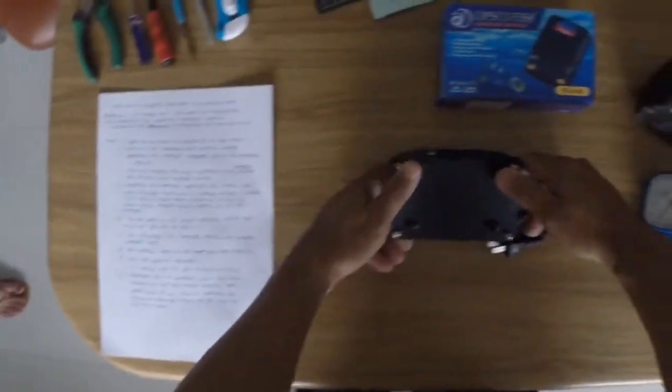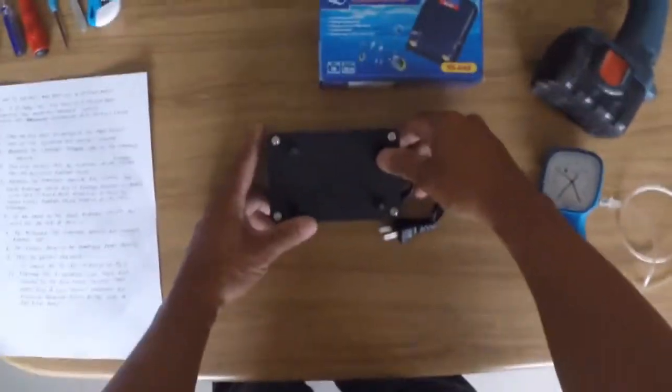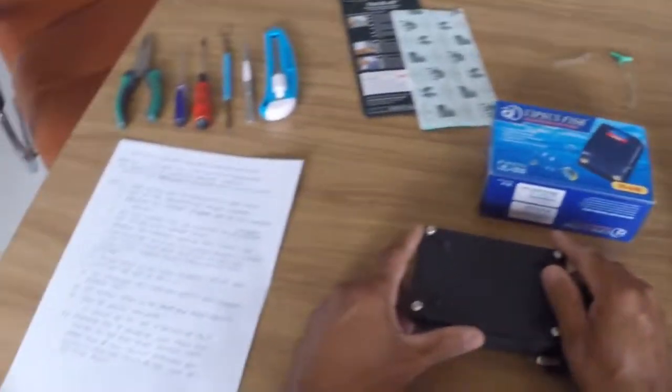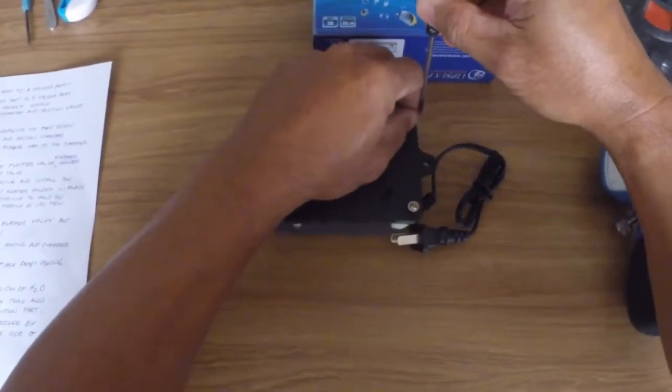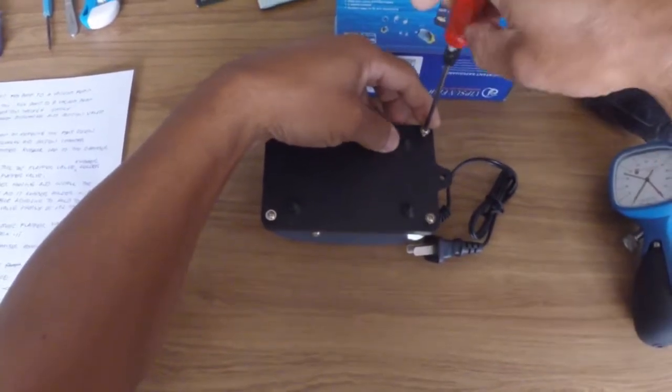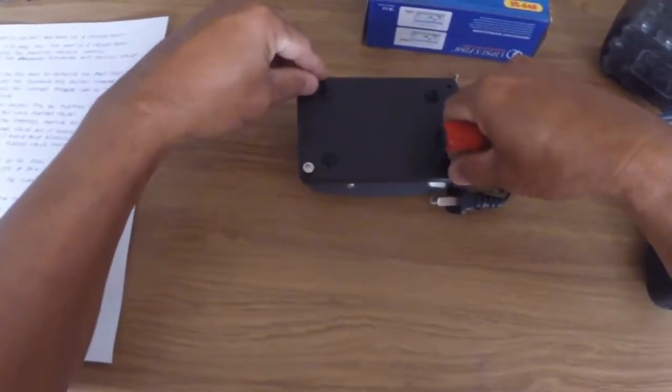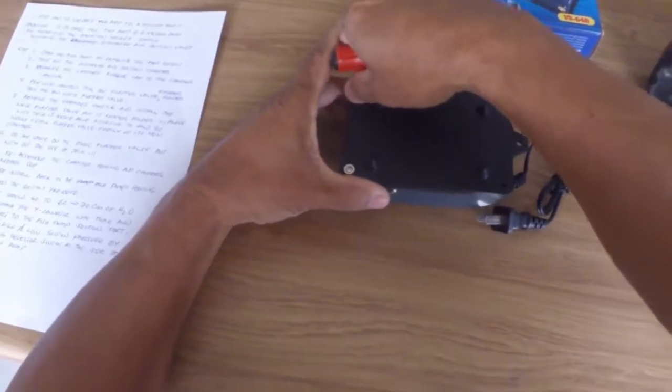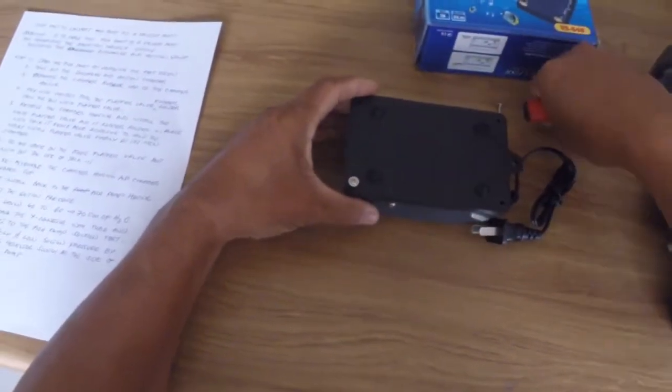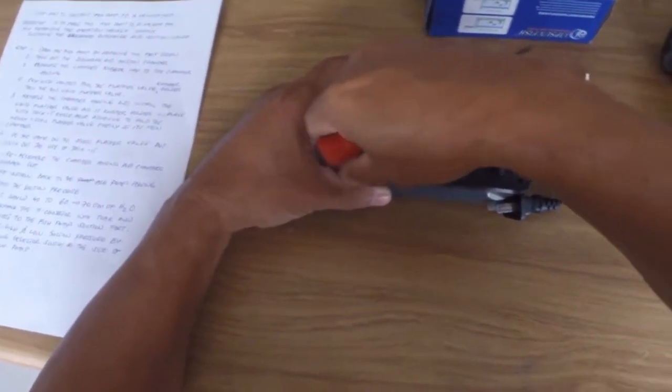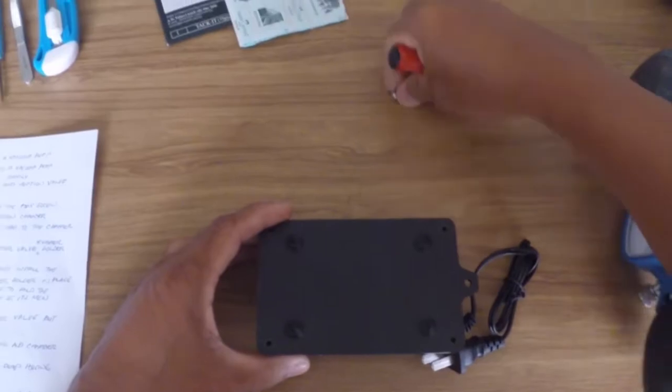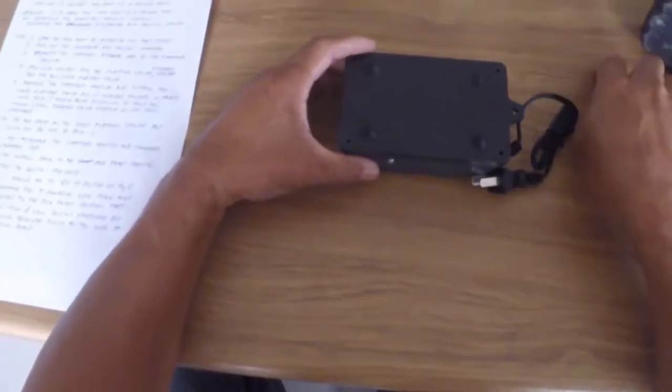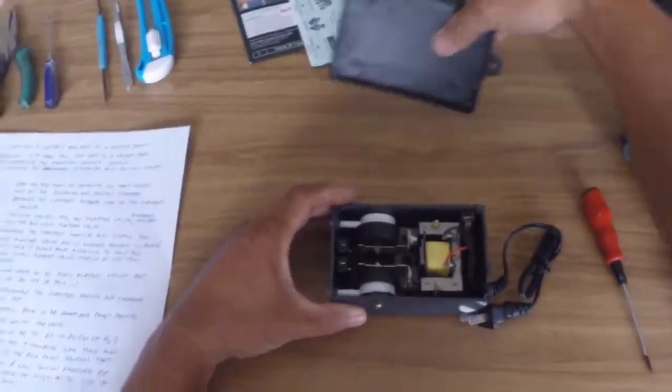Number one, we have to remove the screw. Turn around the suction pump and remove these four screws.